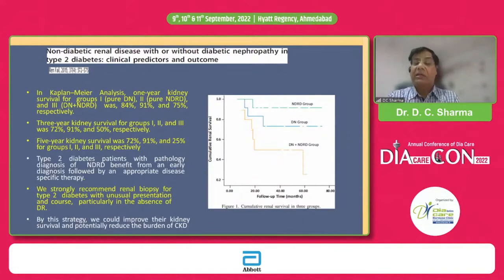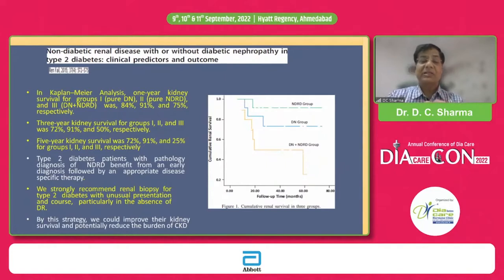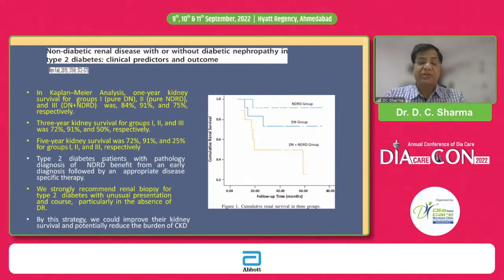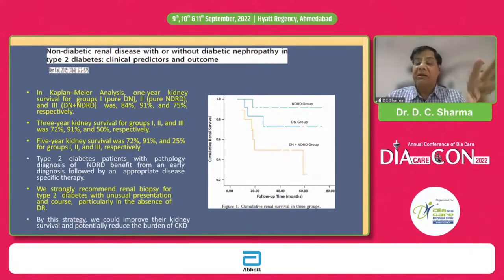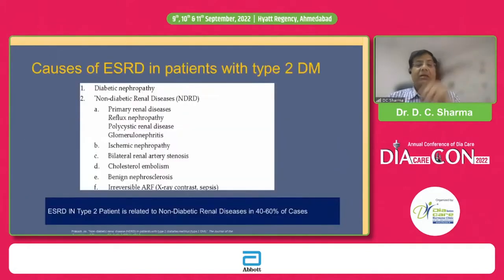In this particular study, there were three groups characterized in diabetic patients: one was non-diabetic renal disease in a diabetic patient, another was diabetic nephropathy, and the third was non-diabetic renal disease developed over a background of diabetic nephropathy. The cumulative renal survival over one, two, or three years was much better in non-diabetic renal disease compared to diabetic nephropathy or patients with both conditions superimposed.